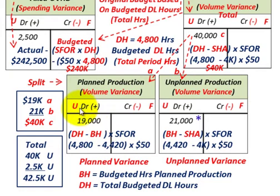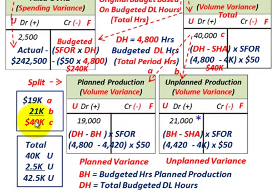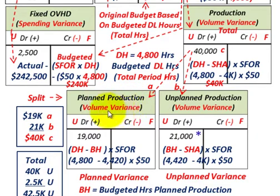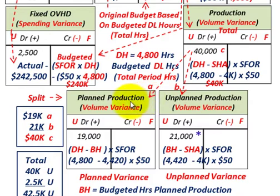So the planned production volume variance is $19,000 unfavorable and the unplanned production volume variance is $21,000 unfavorable. These two add up: $19,000 plus $21,000 equals the total production volume variance of $40,000 unfavorable. That's how we break it down between planned and unplanned production volume variance.